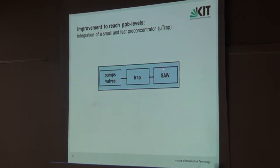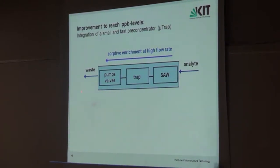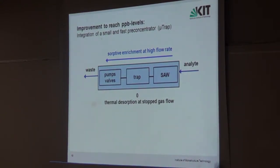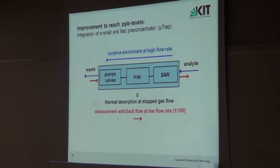The SAW sensor array is on one side; on the other are the trap and a system of pumps and valves. We aspirate with a pump at high flow rate, the analyte over the whole system. We zero the SAW sensors on the non-enriched analyte, and in one cycle blow one liter of gas through the system. Then we stop the flow, stop the pump, and heat up the trap. The trap material — for instance Tenax — absorbs the analyte and releases it when heated. We then blow it back at a very small flow rate — 1/100 of the original — over the sensor.